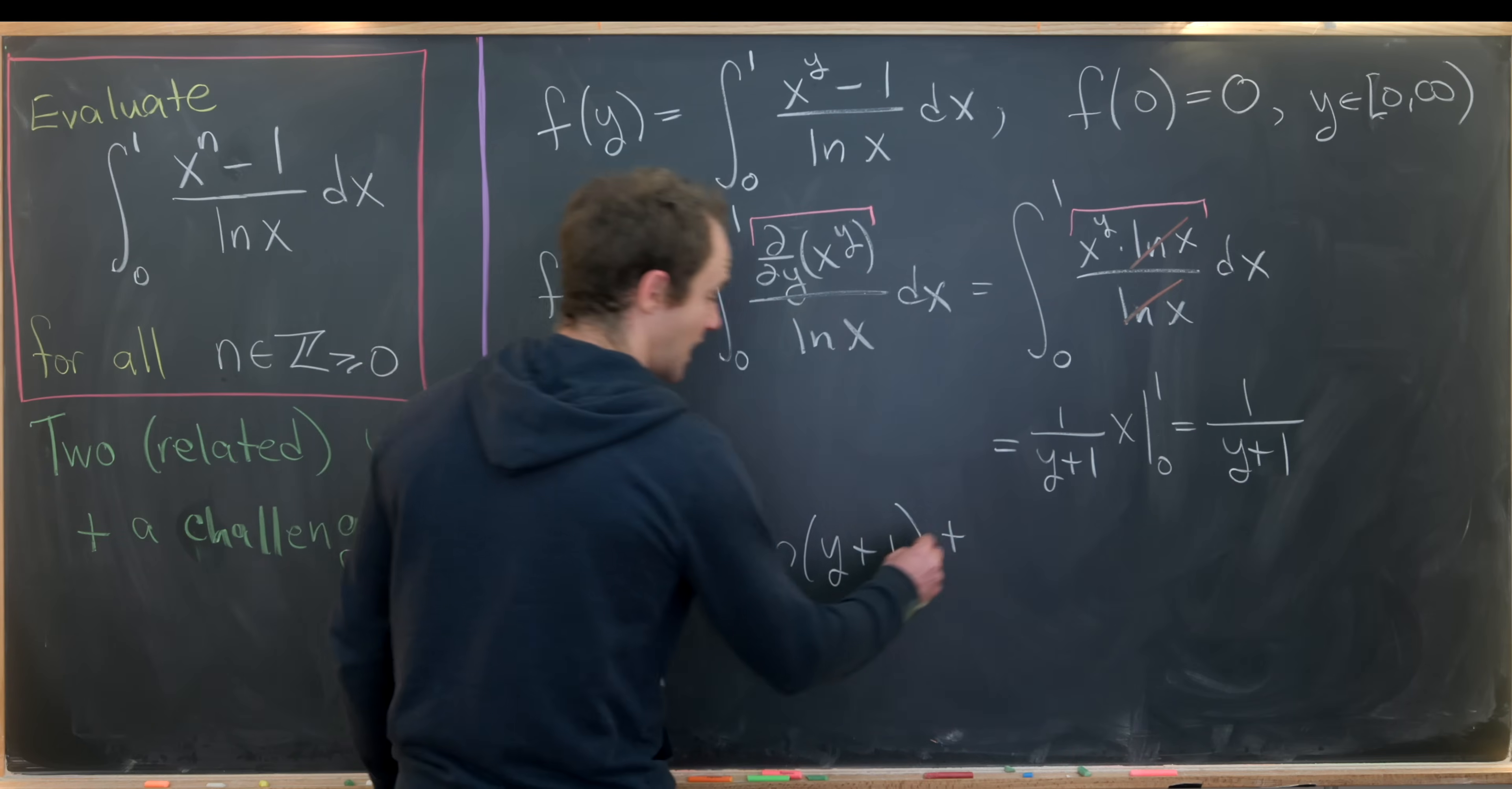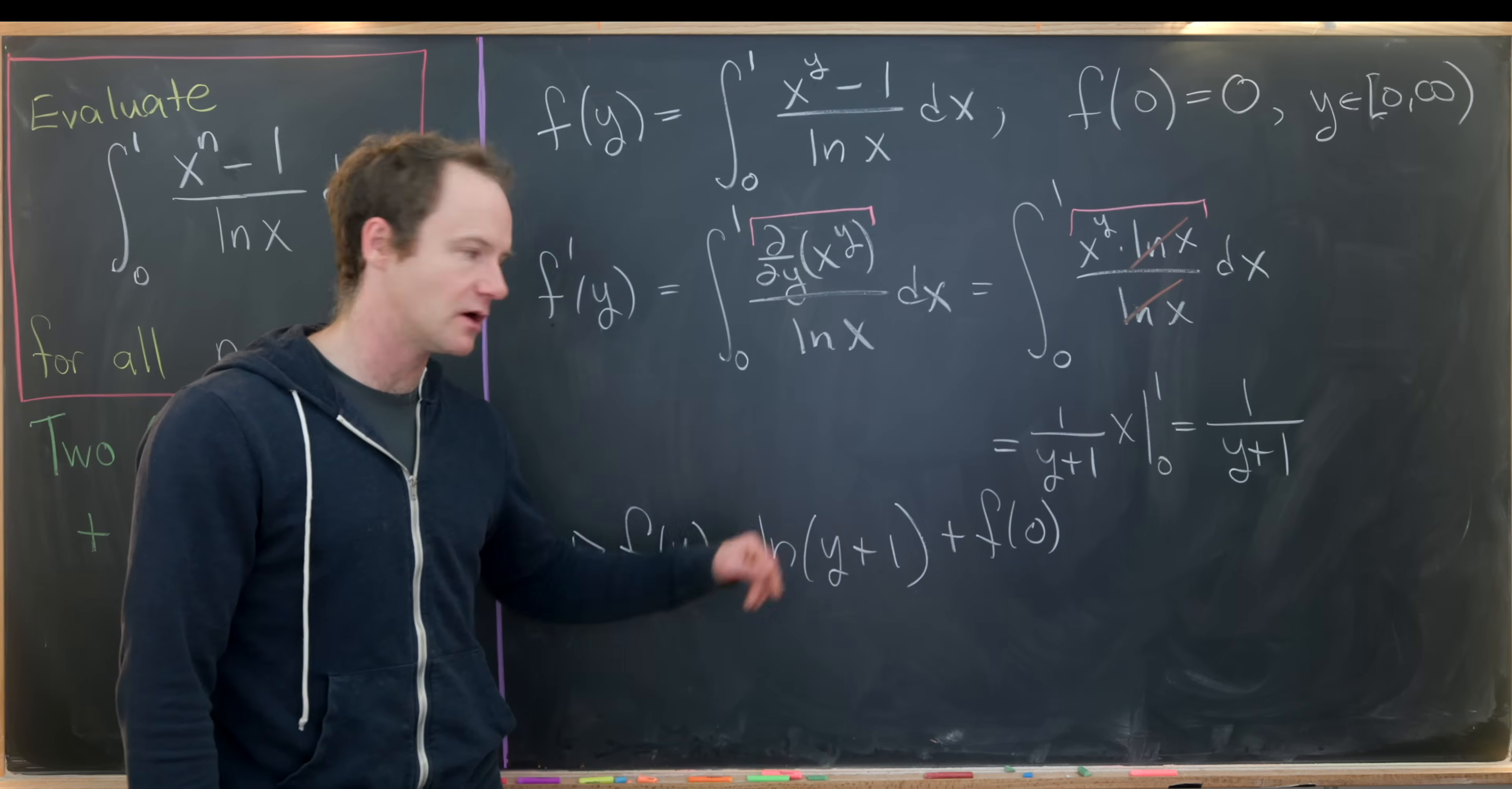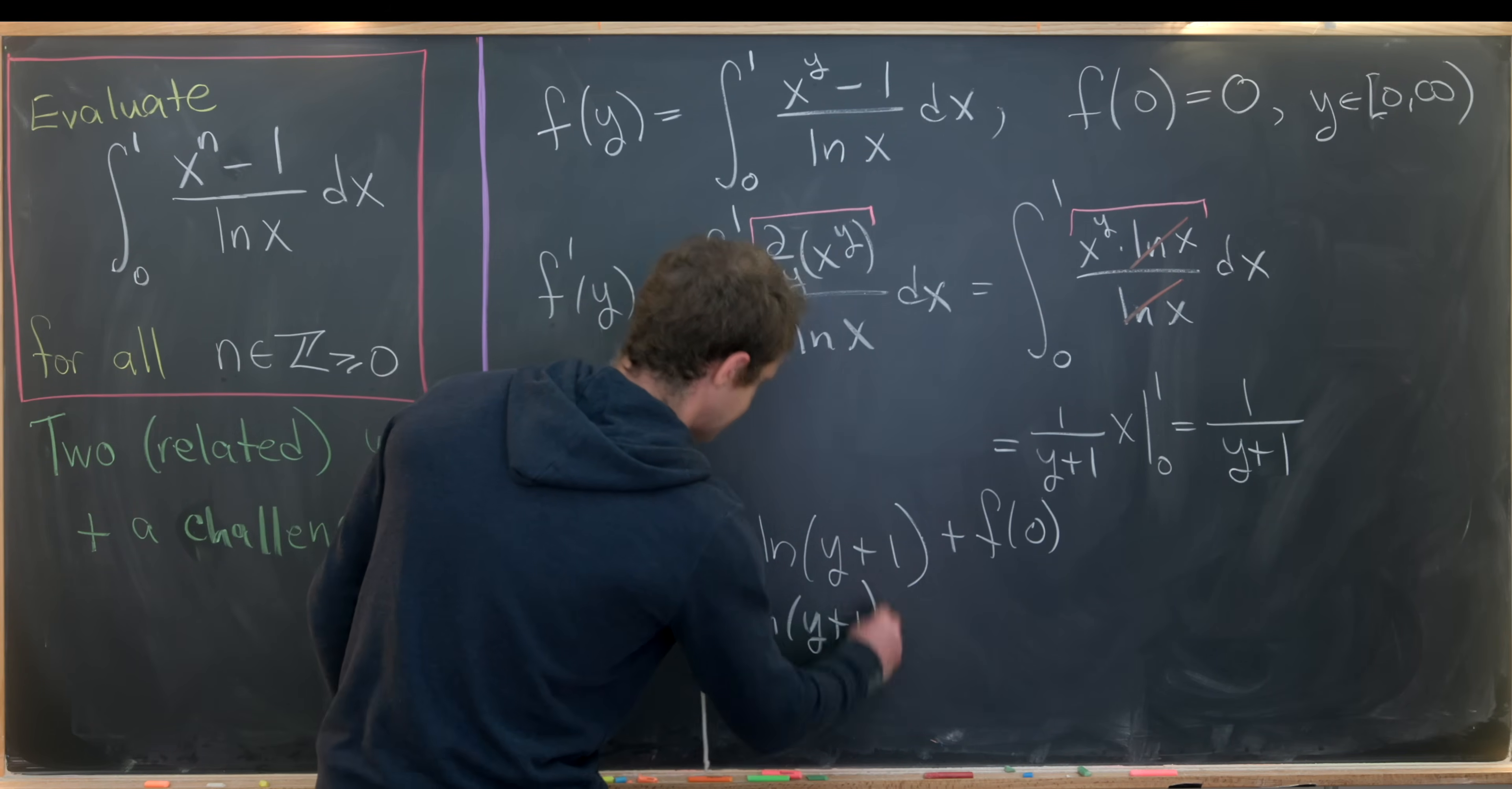But notice that constant will be the value of f at 0. And that's because if we plug y equals 0 into this, we'll get the natural log of 1, which is 0. So that's the constant that we're missing. But that constant was equal to 0, meaning that f of y was equal to the natural log of y plus 1.